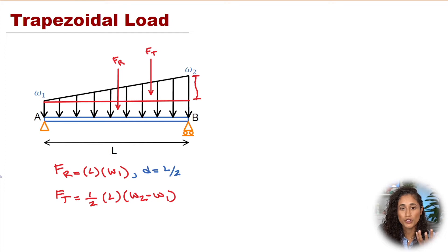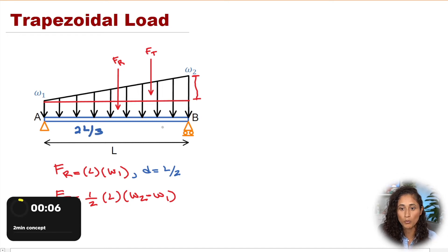The moment arm of the triangle force depends on where we're taking the moment. If we take the moment at A, the moment arm is 2L over 3. If we take the moment at B, the moment arm is L over 3.